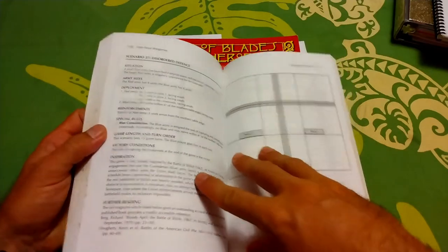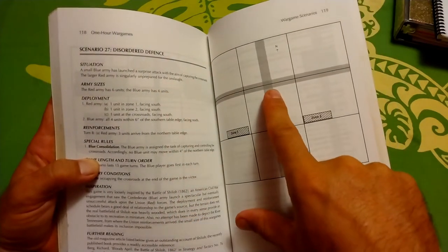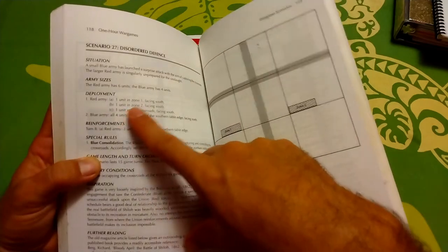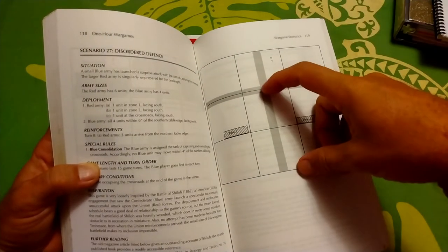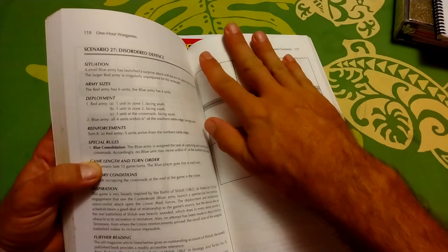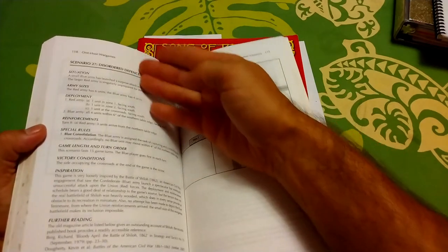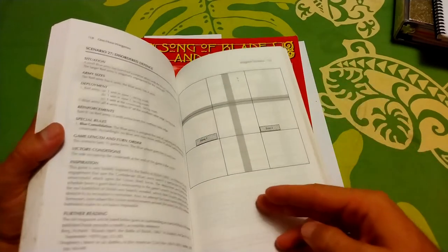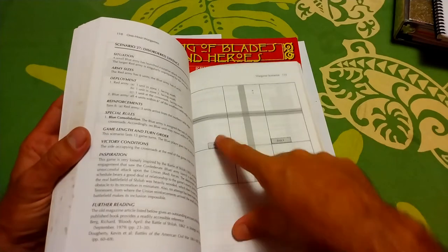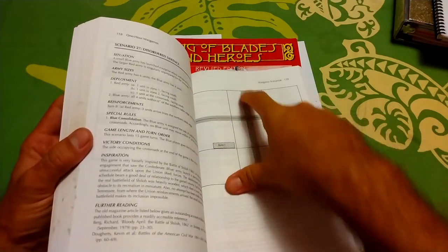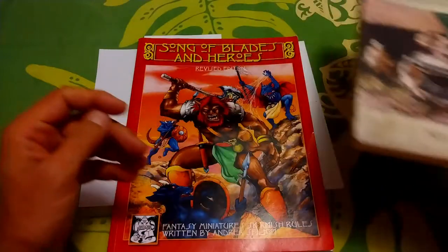We saw this in Neil Thomas's One Hour War Games. Flipping to a random scenario, Disordered Defense. He gives you the situation here. The outside world is that the Blue Army has launched a surprise attack trying to capture this crossroads. The Red Army is unprepared. So the deployment becomes the Red Army gets one unit in each of these zones facing south and one unit at the crossroads, where the Blue Army brings four units up this way. And then there are reinforcements coming in as Blue gets their act together. That's an outside world, it's all stipulated for you. Although that said, at least you get the freedom to put whichever units - you're handed four units, which ones do you want here and which ones coming in? So there's that little bit of generalship you exercise prior to turn one beginning proper.